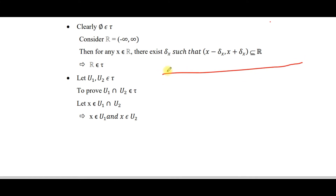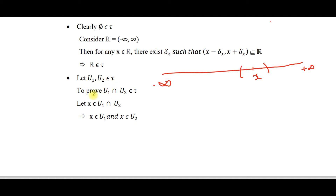That is, if we take the real line (−∞, +∞) and take any element from ℝ, we can find an open interval that is a subset of ℝ. Therefore ℝ belongs to τ, so the first condition is satisfied. Moving on to the second condition: let U₁, U₂ belong to τ; we have to prove that their intersection also belongs to τ.